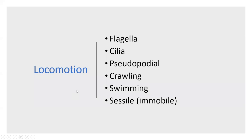Let's start with a little bit of locomotion. In the description below I will provide some links to depictions of flagella, cilia, and pseudopodal motion because I think it's important to have a visual of those. Crawling and swimming you can probably imagine — babies crawl, think of fish for swimming — and then lastly there's sessile or immobile, which is an organism that doesn't have a built-in locomotion style and might rely on the environment to move it.